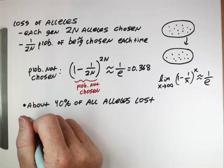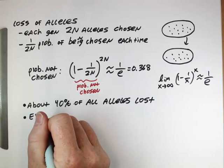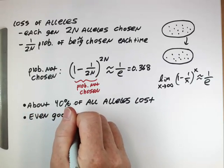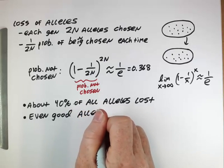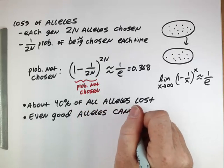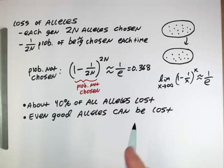And one of the things in particular is that even good alleles can be lost. So this process of alleles not being chosen, that even applies to advantageous alleles. Now they're a little bit more likely to be chosen, so they're a little less likely to not be chosen. But it is still possible for advantageous alleles to be lost. There's no guarantee that they're the ones that are actually going to fix.